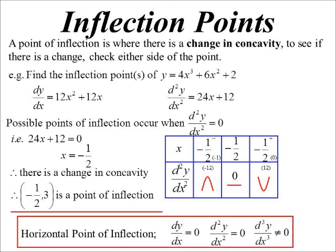Now there's a special type: a horizontal point of inflection, which is an inflection point that is also a stationary point. The most classic example is the cubic. Not all points of inflection are stationary — think of your tan curve, which inflects, but at the point of inflection the tangent is at 45 degrees, so it's not horizontal. A horizontal point of inflection is where the tangent would be horizontal, hence the name.